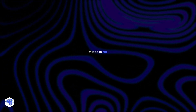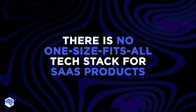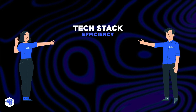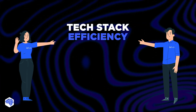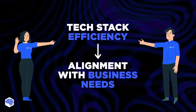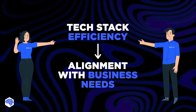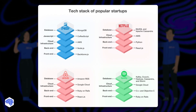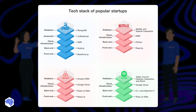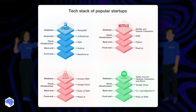Finally, remember there is no one-size-fits-all tech stack for SaaS products. The Jelvix team emphasizes that tech stack efficiency will depend on how well it matches your specific business needs. Once you have a good understanding of your product's requirements, you can start to narrow down your choices to find your perfect fit. And while you're evaluating your options, have a look at some famous companies who tackled the tech stack question.